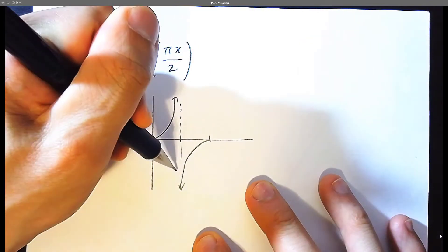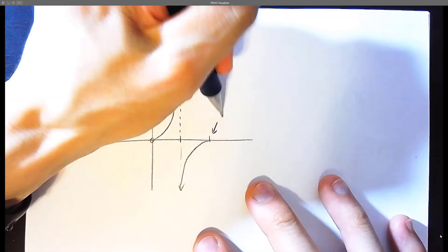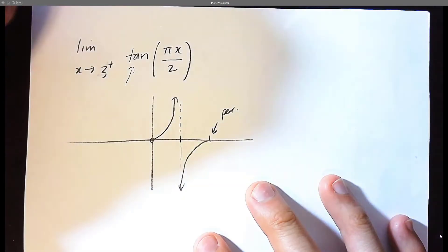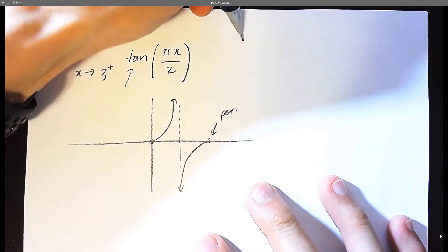So this is a vertical asymptote. Now this is the period of tan. Every two jumps we have a period. Now what is the period of tan?